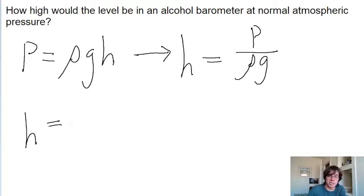So h is equal to the pressure, which is just atmospheric pressure, because the problem tells us normal atmospheric pressure, which has a magnitude of 1.013 times 10 to the power of 5 newtons per meter squared.